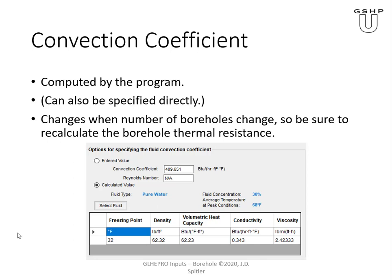The convection coefficient is computed by the program, or if you'd like you can enter a fixed value. It depends on the fluid properties, which is one reason why when you specify the fluid you specify the average temperature at the peak condition. If you're in the midst of a design and changing the number of boreholes, you need to recalculate the borehole thermal resistance each time because the flow per borehole is going to change, and so then the convection coefficient changes.